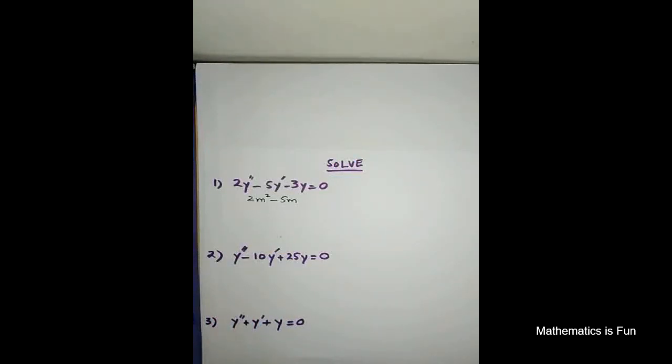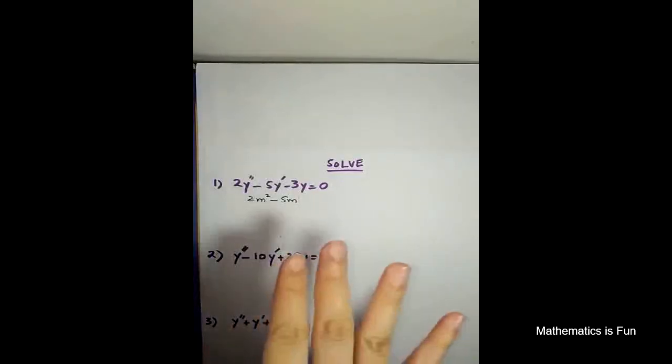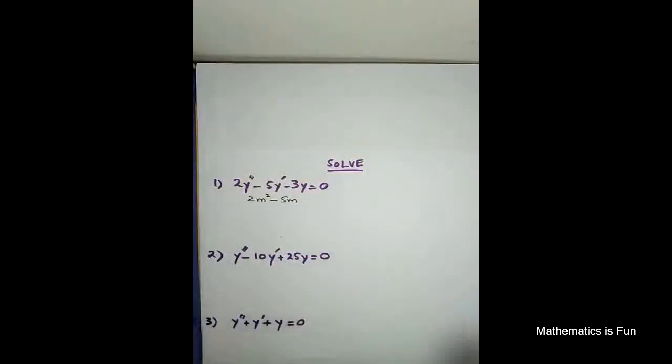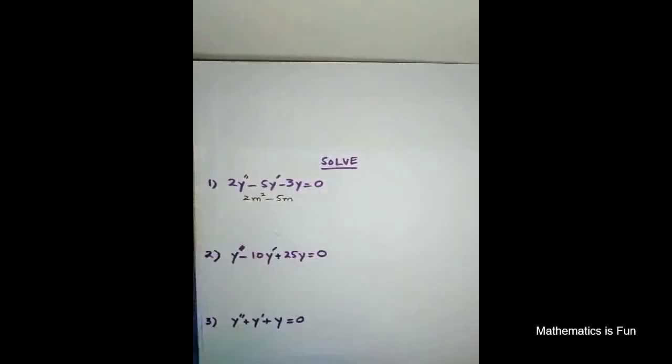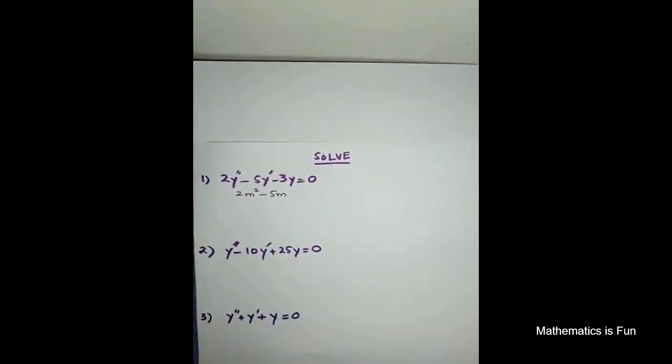So first of all, you have to check that whether it is a second order differential equation. Yes, it is a second order differential equation. It is homogeneous. Yes, it is homogeneous. It is linear. I can see that it is a linear equation, differential equation, and it has constant coefficients.